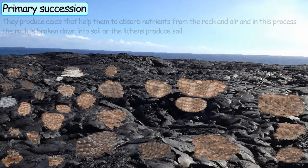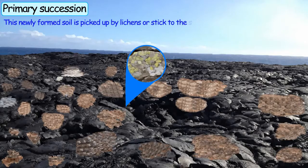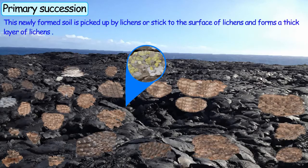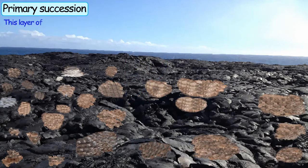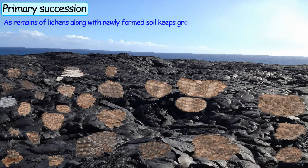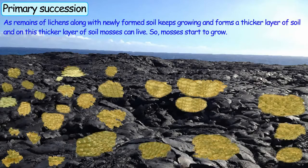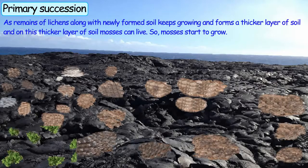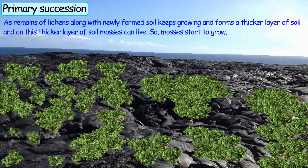This newly formed soil is picked up by lichens or sticks to the surface of lichens and forms a thick layer of lichens. This layer keeps on growing as more lichens die. As remains of lichens along with the newly formed soil keep growing, mosses can live on this thicker layer of soil, so mosses start to grow.